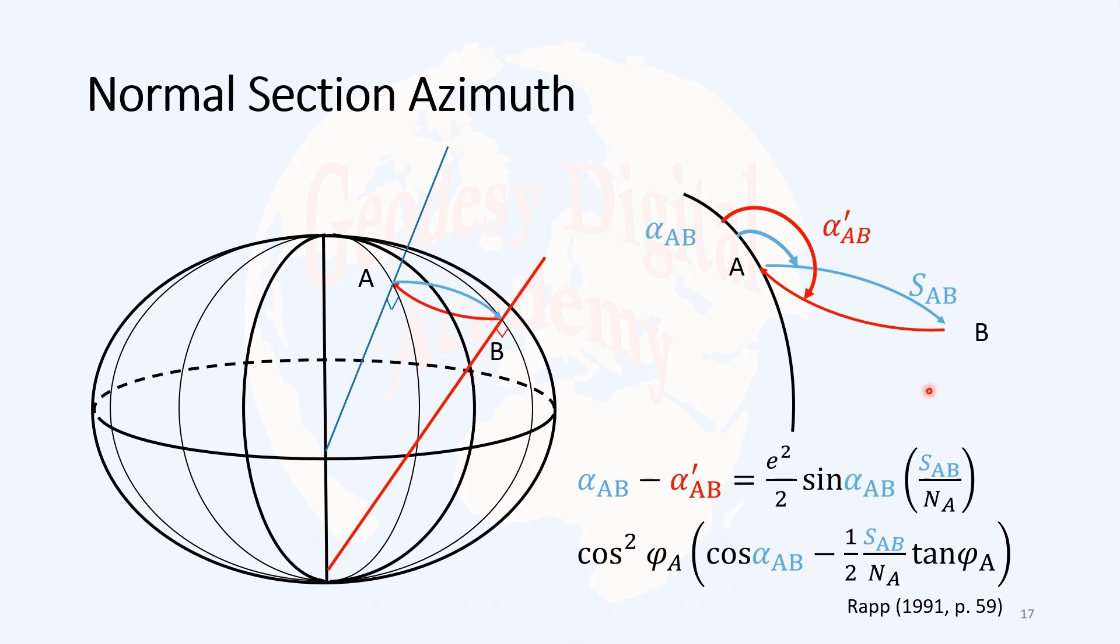Now the point is, what will be the azimuth of these normal sections? On the right side you see the azimuth to the normal section from point A to B and also the azimuth from the section from B to A. These two azimuths are not the same, and the difference can be computed simply by this formula. Note that for computing this, you need information about the ellipsoid parameters, also the azimuth and curve length from point A to B.